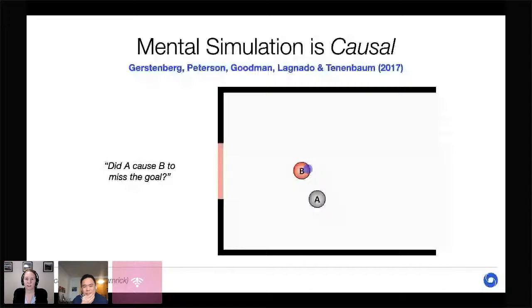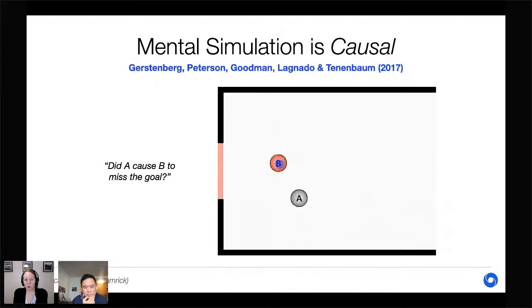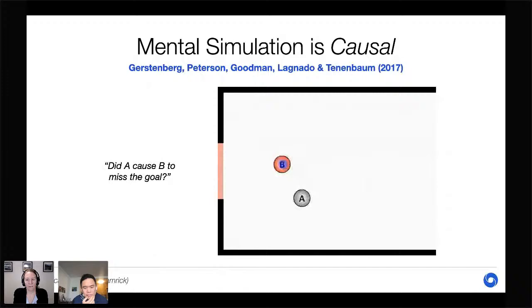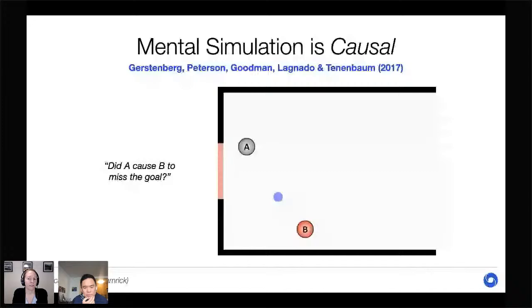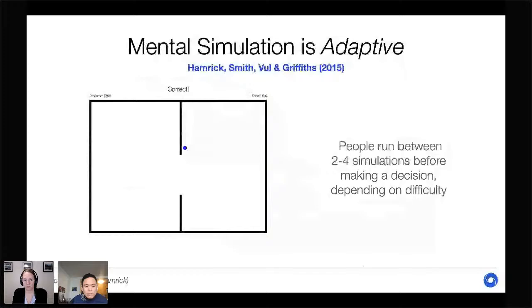Fourth, mental simulation is causal — we understand what would happen if certain aspects of a scene weren't present, or how things would change if something else were there. For example, Gerstenberg et al. showed people scenes of bouncing balls and asked whether ball A caused ball B to miss the goal. Eye-tracking showed participants paying attention to B and simulating what would happen if A hadn't been there. From that counterfactual simulation they judge causality — yes, A caused B to miss, because without A it would have gone in.